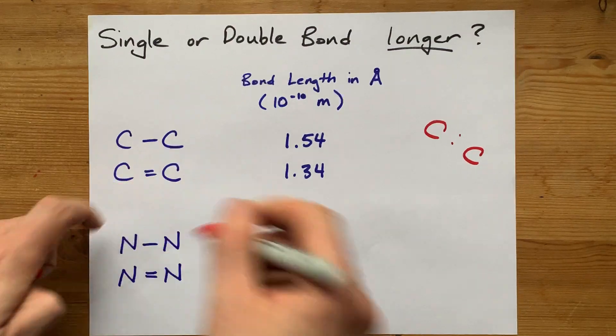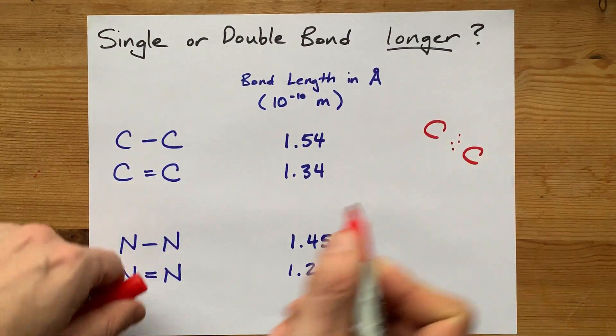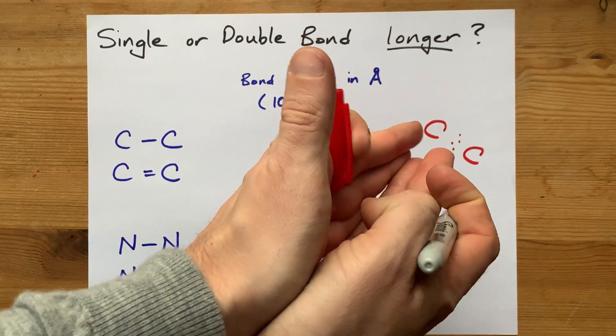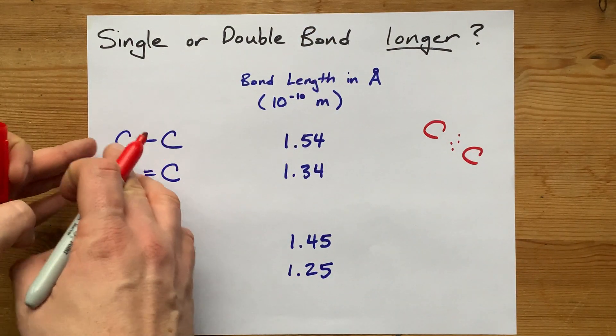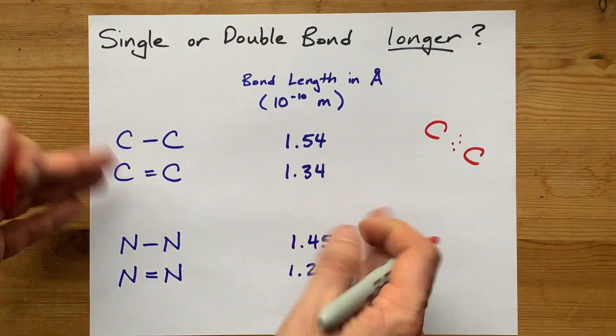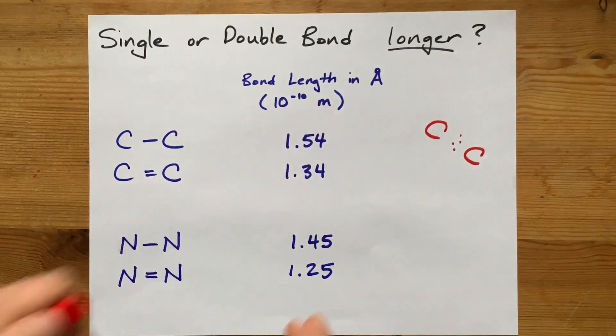But then a double bond has four particles of glue that's able to pull the positive charges in closer together. The single bond is longer because you have less glue holding the two nuclei together.